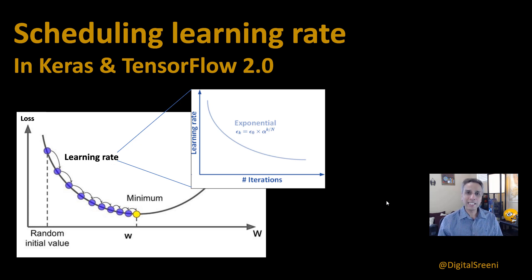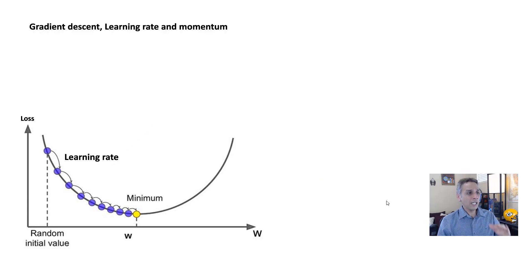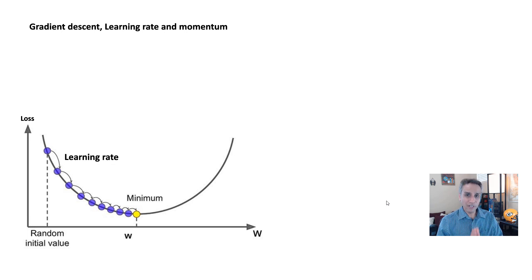Before jumping into the code, let's have a quick look at what we mean by learning rate and what momentum is. Any machine learning tries to minimize a loss function — there can be many different types, for example mean squared error for linear regression. In stochastic gradient descent, and most neural network based optimizers, you're trying to find the minimum of this loss function, and that's where the solution is.